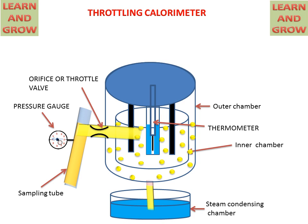And from the outer chamber, it will go to the steam condensing chamber. And in the steam condensing chamber, this will be condensed into water. This is the working of throttling calorimeter. We can calculate dryness fraction through throttling calorimeter by some readings.